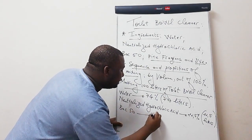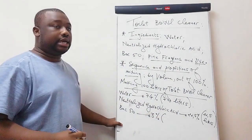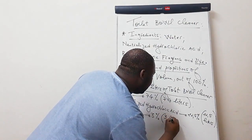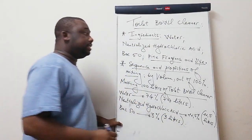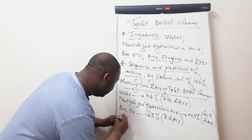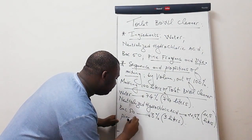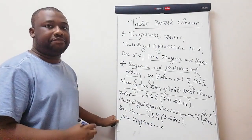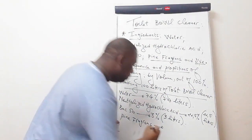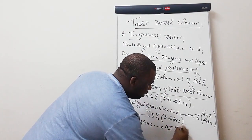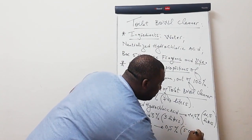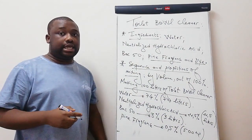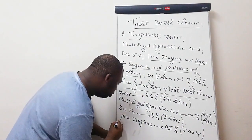The next ingredient is Bac 50. This should be 23.5 liters. The next ingredient is pine fragrance, which should be 0.5% of the total volume — that's about 500 milliliters out of your total volume of 100 liters.